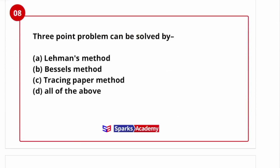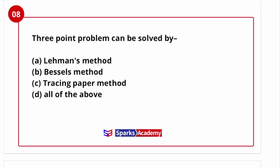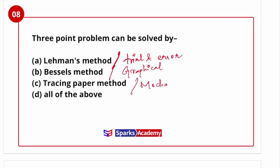Three methods are used to solve the three-point problem: the Lame method, which is the trial and error method; Bessel's method, which is the graphical method; and the tracing paper method, which is also called the mechanical method. So the answer is all of the above.